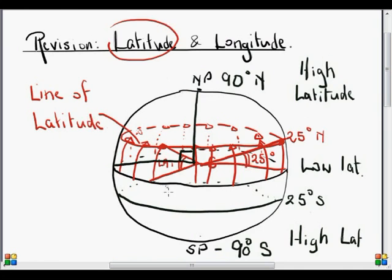Now, that, of course, doesn't define exactly where a place is. It just defines its distance from the equator. So we need something else to define where it is along that line. And that, of course, is longitude.